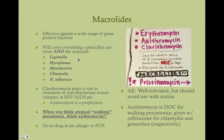Macrolides cover Legionella — a possible cause of pneumonia — mycoplasma (walking pneumonia), mycobacteria, chlamydia, and Haemophilus influenzae. Clarithromycin plays a unique role in the treatment of MAC (Mycobacterium avium complex) in HIV/AIDS patients — an opportunistic disease that AIDS patients get when their CD4 counts drop enough. Azithromycin is used as prophylaxis for that disease. So macrolides play an important role in both prevention and treatment of MAC disease in HIV/AIDS patients.